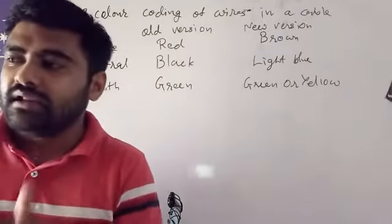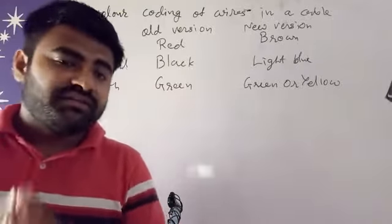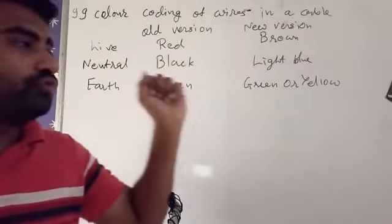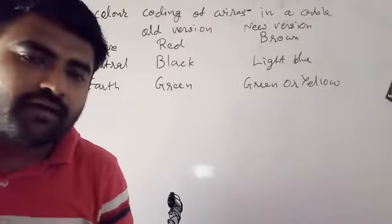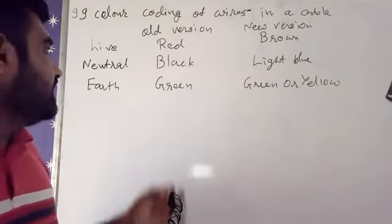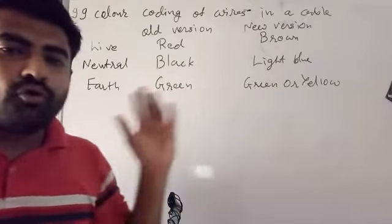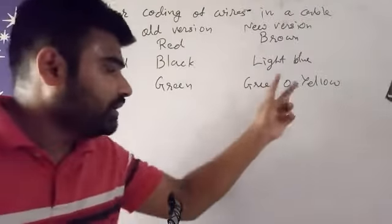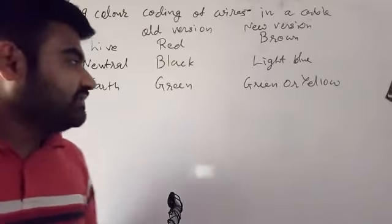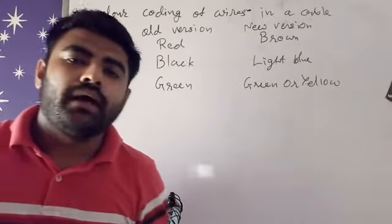But if we talk about the new version, brown means they will immediately understand it's the live wire. Light blue means they will immediately understand it's for neutral. And if there's green or yellow, either one, they will immediately understand that it's the earthing wire.